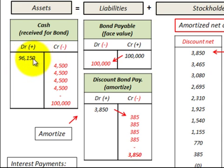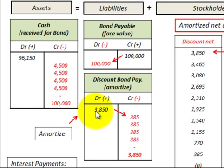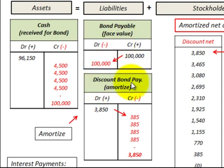We need a balancing entry between the $96,150 and the $100,000, and what we use is a discount on bonds payable. This is a contra account to bonds payable — it reduces the bonds payable account and also represents an added interest expense that we recognize on this bond.